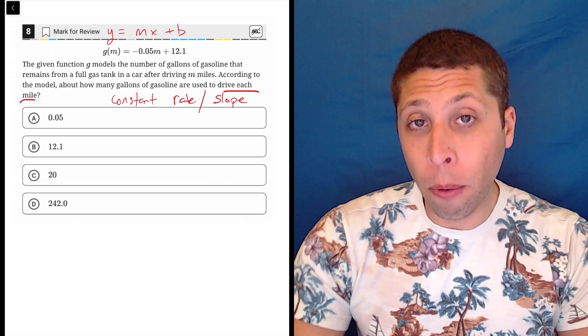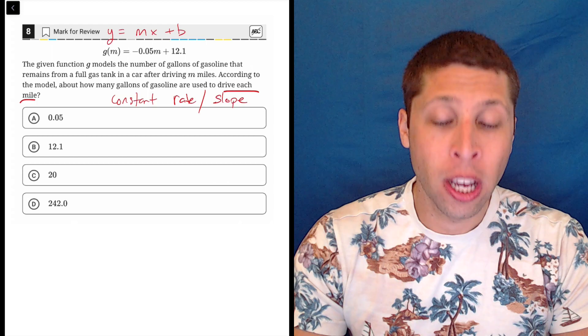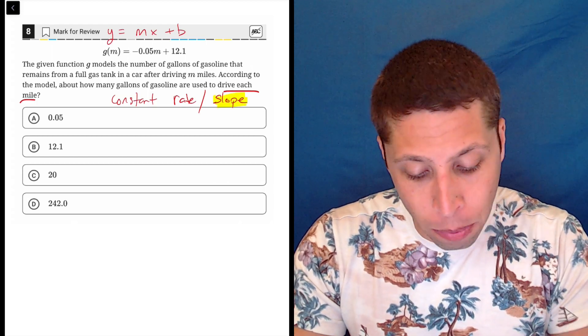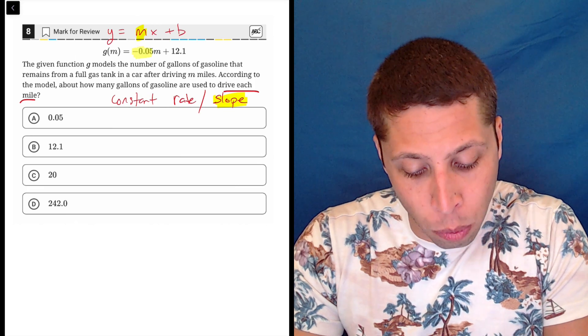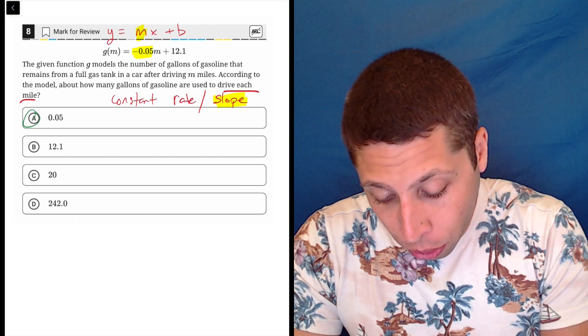And so now hopefully we just know how y equals mx plus b works. The number that is attached to the variable is the slope. So in this case, our slope is given by the m portion, which in this case is negative 0.05. So that's choice A. And that's it. That's the whole thing.